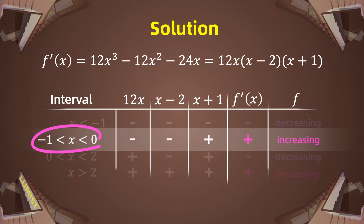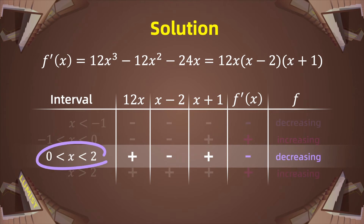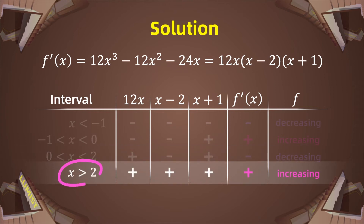On the interval between negative 1 and 0, f'(x) is greater than 0, so f(x) is increasing on the interval negative 1 to 0. Then on the interval 0 to 2, f'(x) is less than 0, so f(x) is decreasing on the interval 0 to 2. And at the interval x greater than 2, f'(x) is greater than 0, meaning f(x) is increasing on the interval 2 to positive infinity.